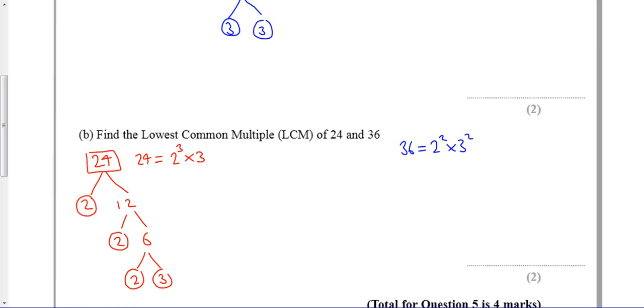I can use that to draw what I call a Venn diagram, where all the prime factors of 24 go in there and all the prime factors of 36 go in there. All the ones that are in both go in the middle. I like to get the middle ones out of the way first.